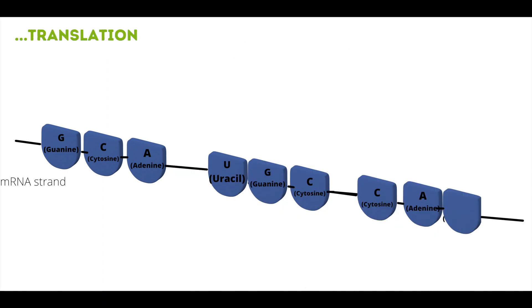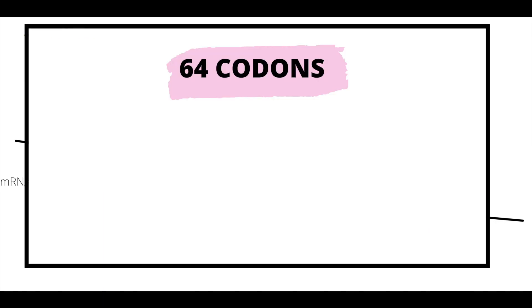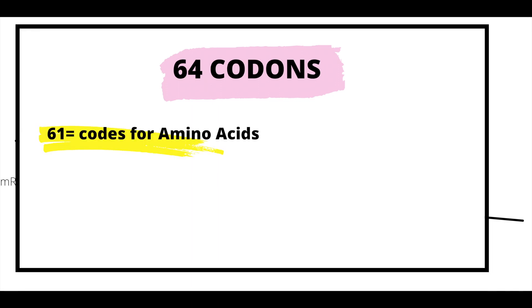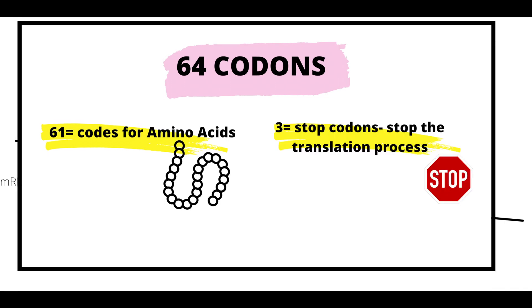In the mRNA strand, nucleotides come in sequences of three called codons. Here we have a codon of guanine, cytosine, and adenine. There are 64 possible codons using adenine, uracil, guanine, and cytosine. 61 code for amino acids to make proteins, but three are stop codons that stop translation.